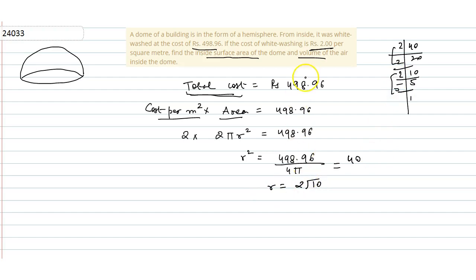We will find the volume of air inside the dome. So now we have to calculate volume. What is the formula of hemisphere's volume? Volume of air is equal to 2/3 πr³.